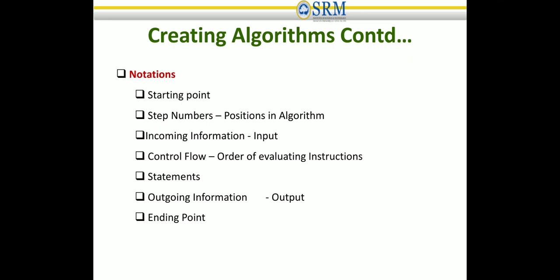Every algorithm has certain notations. First, a starting point — the initial procedural step to start the algorithm. Then, step numbers: for every single instruction, you assign step numbers — Step 1, Step 2, Step 3 — until the end of the algorithm. Incoming information is the data you want to process with the algorithm, also called input.